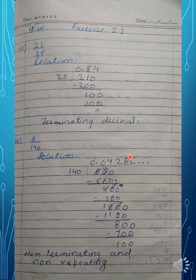The digits in the decimal are 4, 2, 8, 5, then 2, 3, 1 — all different numbers. Since the same pattern doesn't repeat, we say this is non-terminating and non-repeating. We hope you understood the difference between terminating and non-terminating decimals.